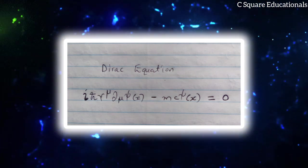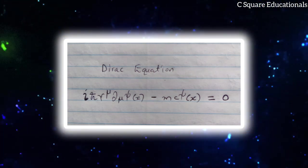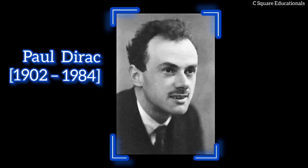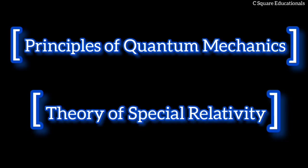In particle physics, the Dirac equation is a relativistic wave equation derived by British physicist Paul Dirac in 1928. In its free form, or including electromagnetic interactions, it describes all spin-half massive particles, called Dirac particles, such as electrons and quarks, for which parity is a symmetry.